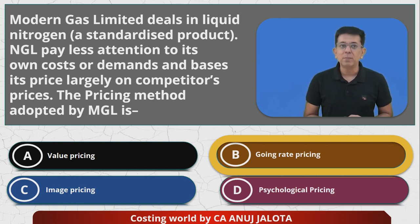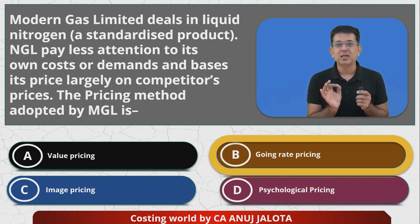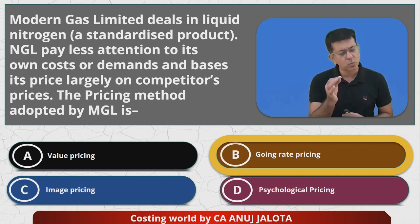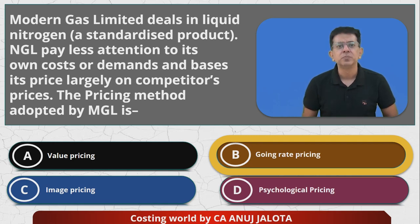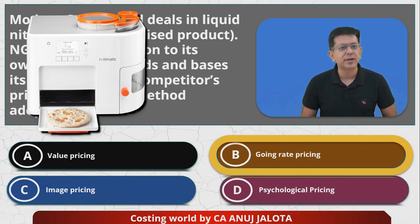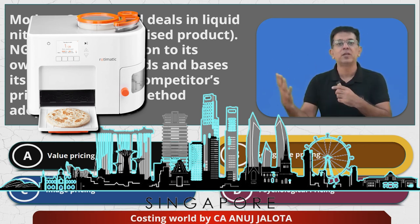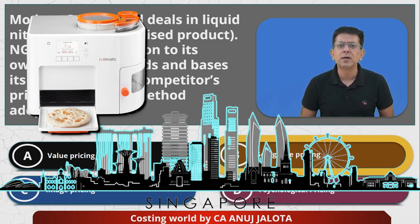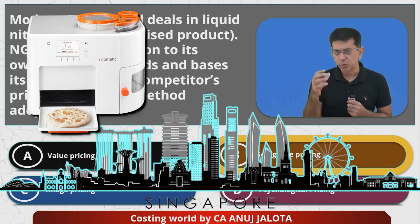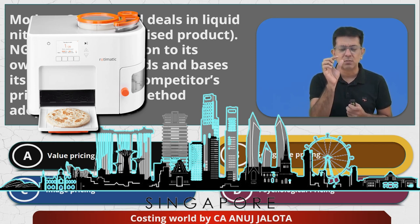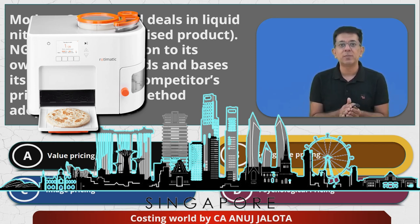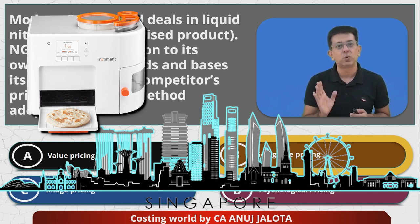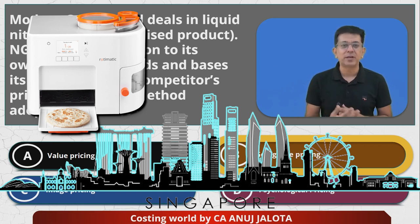Now remember, value-based pricing is pricing done based on the value a customer assigns to a product. Here's an example: there is a product called Rotimatic, available in Singapore and the US. It's made by a Singapore company. Basically, Rotimatic is a machine where you put dry wheat flour, water, and a small amount of oil, and it automatically makes chapatis completely.